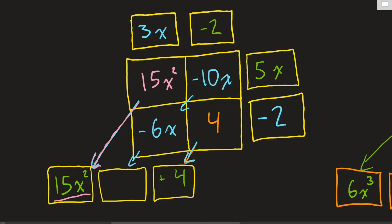And sure enough, I can combine these things. Negative 10x and negative 6x makes negative 16x. And so if I want to write this out as like a statement, what this shows is that 3x minus 2 times 5x minus 2 equals 15x squared minus 16x plus 4.